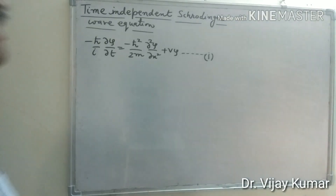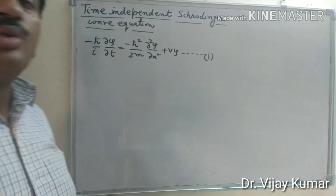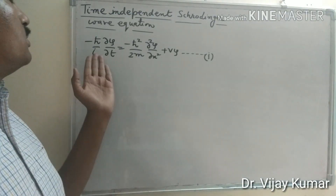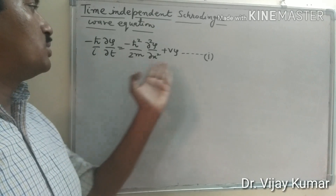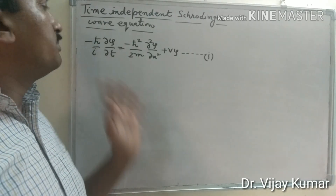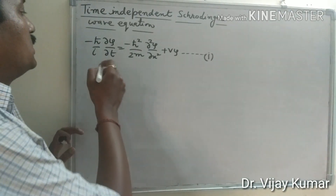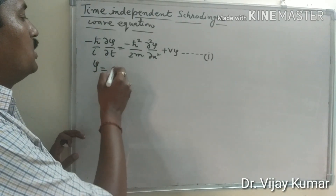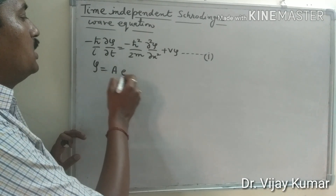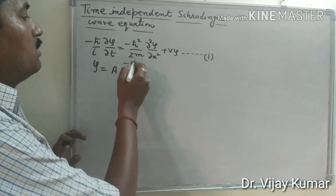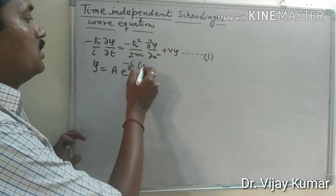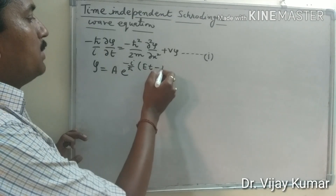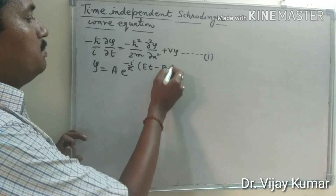Today we derive the time-independent Schrödinger wave equation from the time-dependent Schrödinger wave equation. We know that psi equals A e to the power minus i upon h-cross, quantity Et minus px.